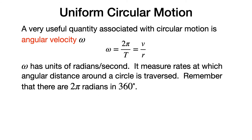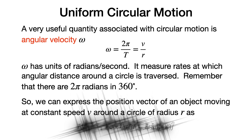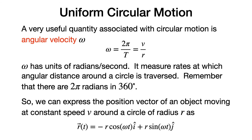Omega measures the rate at which angular distance around the circle is traversed. Remember that there are 2π radians and 360 degrees. We can express the position vector of an object moving at constant speed v around a circle of radius r as: r(t) equals minus r cosine(ωt) in the i-hat direction, plus r sine(ωt) in the j-hat direction. This is one possible description of the position vector as a function of time.